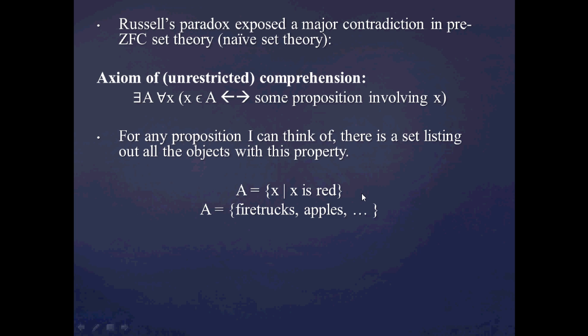And of course, you can do something like this where the set A would have things like fire trucks, apples, and a bunch of other red objects. Correspondingly, you can plop in another proposition such as x is not a motorcycle and B would just list out all the elements that are not motorcycles.